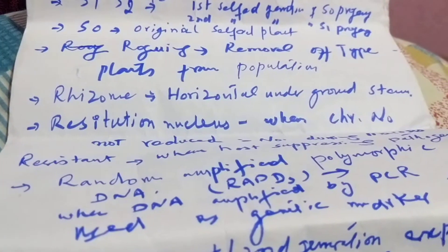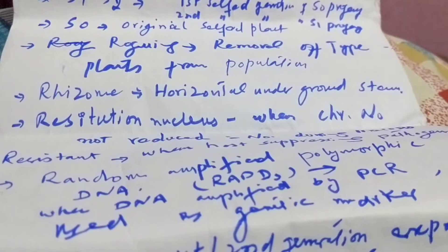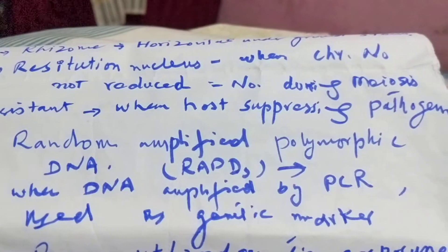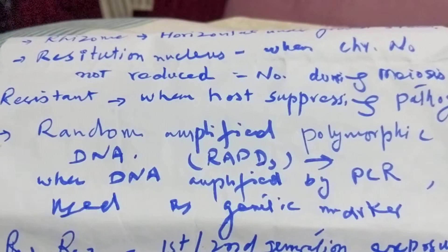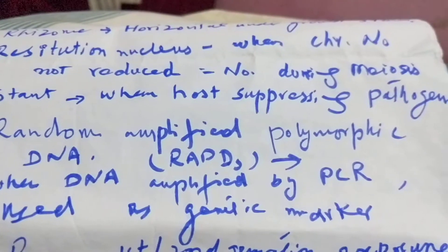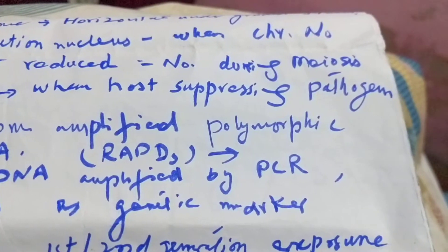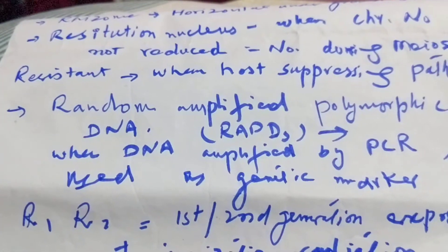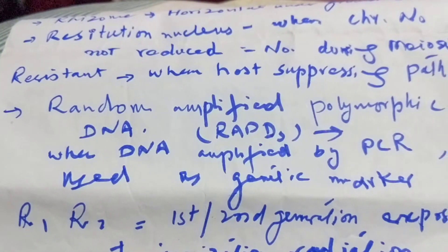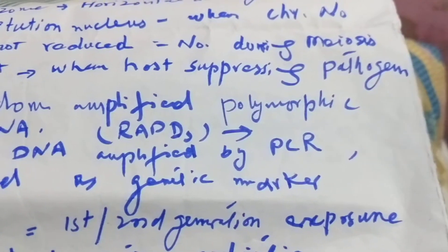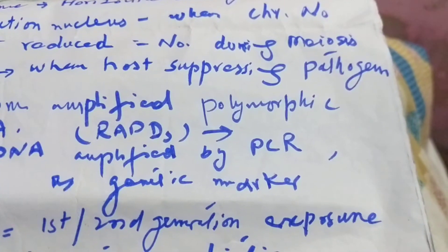Rhizome is a horizontal underground stem. Restitution nucleus is when chromosome number is not reduced during meiosis. Resistant is when the host suppresses the pathogen.